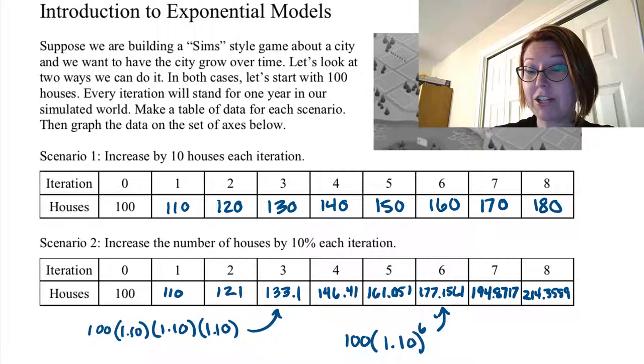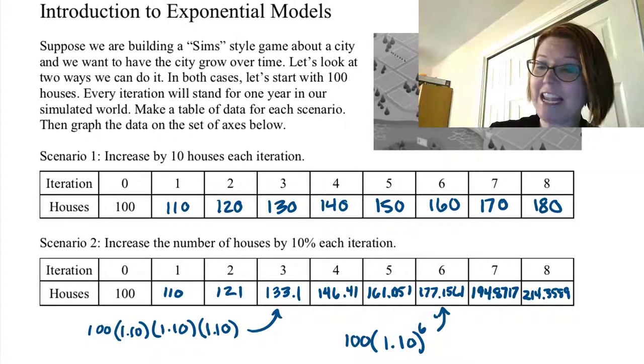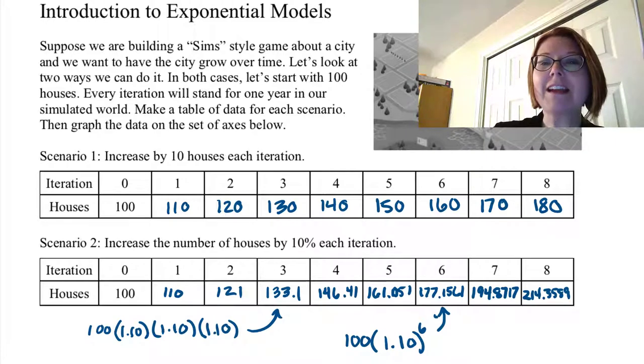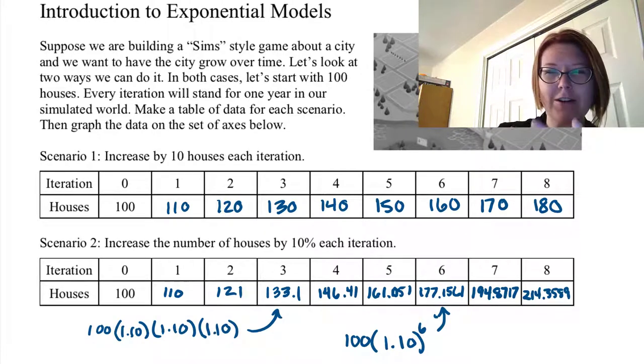For the seventh iteration, 194.8717 houses. And for the eighth iteration, 214.3589 houses. You can see that the second scenario involves numbers that are not quite as nice as the first scenario.